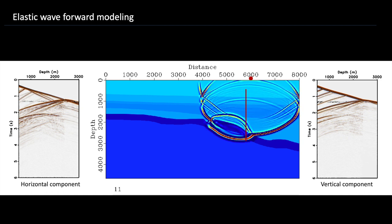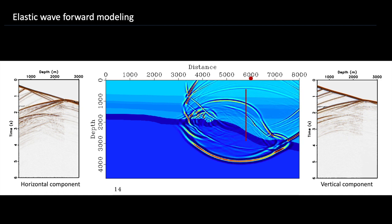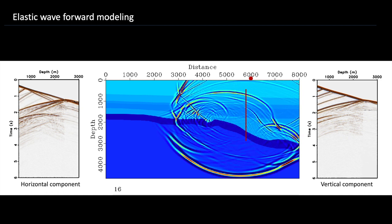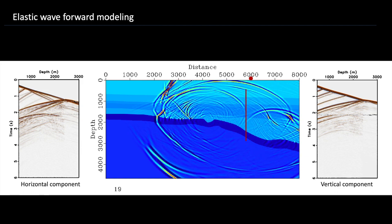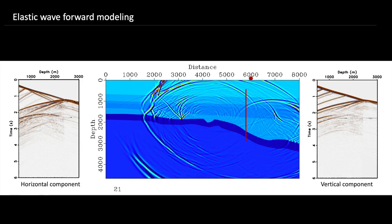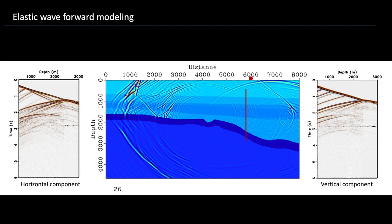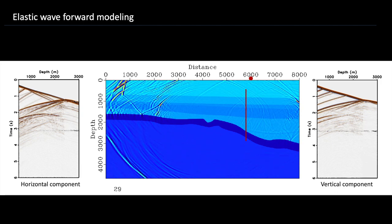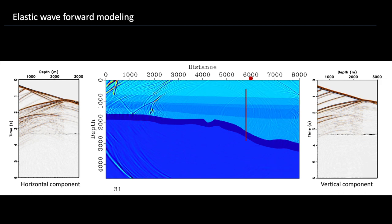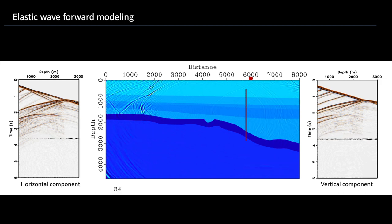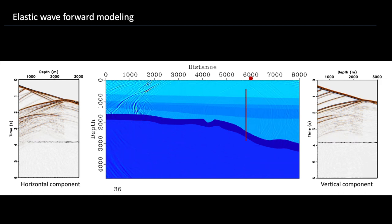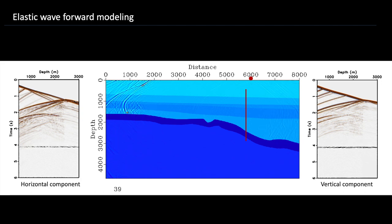This is a two-component vertical seismic profile. Two component, you get it obviously that two seismograms show in front of you. One is a vertical component, receives vertical particle motions. And the another is a horizontal component, correspondingly receives horizontal particle motions.